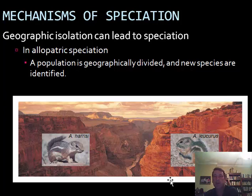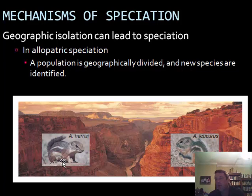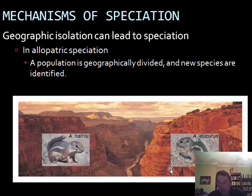One type is represented by these ground squirrels. We have two species of the same genus — A. harisi and A. leucurus — two different species of ground squirrels that look very similar. If we went on physical appearance alone, we'd probably group them as the same species. But they've been separated from one another for a long period of time by a geographical barrier: the Grand Canyon. One is found on one side of the canyon, the other on the opposite side. They don't breed with each other, can't navigate the canyon, and have become genetically distinct and isolated, with their gene pools becoming separate.